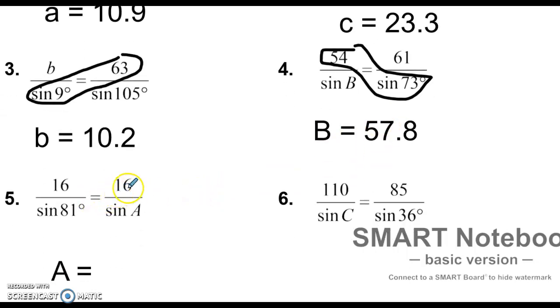Next one. This time we're also looking for A. We're going to go 16 times the sine, so 16 sine of 81, find the answer, divide it by 16. I get a decimal. I do the inverse sine of my answer and I get 81.